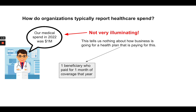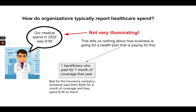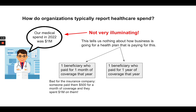For example, this health plan could have had one beneficiary who paid for one month of coverage that year — and that would be horrible for the insurance company, because somebody paid them like $500 for a month of coverage and the insurance company spent a million dollars on this patient. Another situation could be one beneficiary paid for a full year of coverage that year. That's a little bit better for the insurance company, still horrible, but somebody paid them for 12 months of coverage and the insurance company spent a million bucks on them.